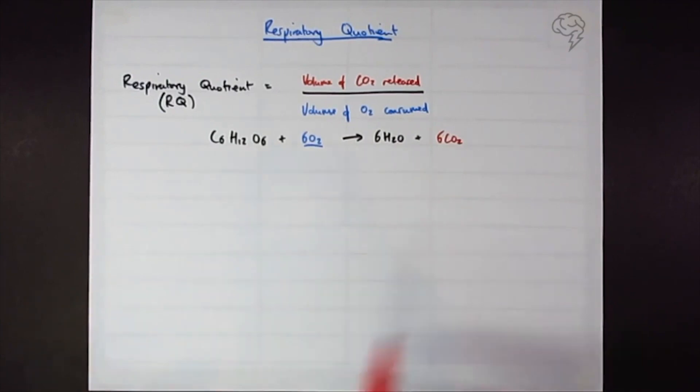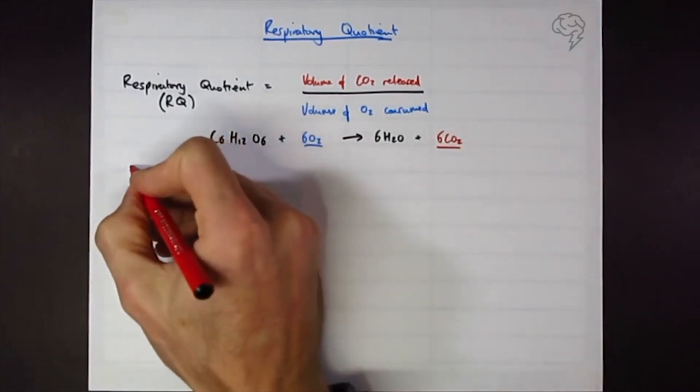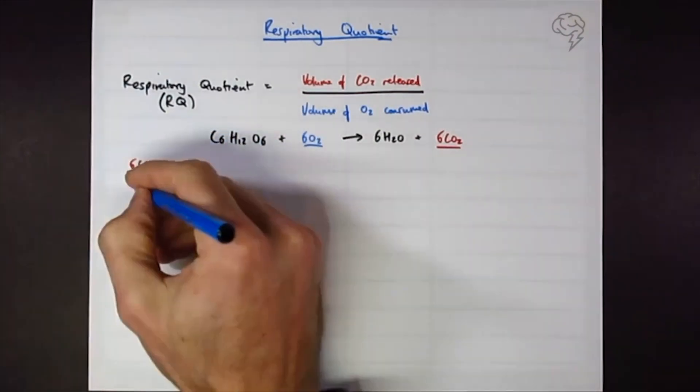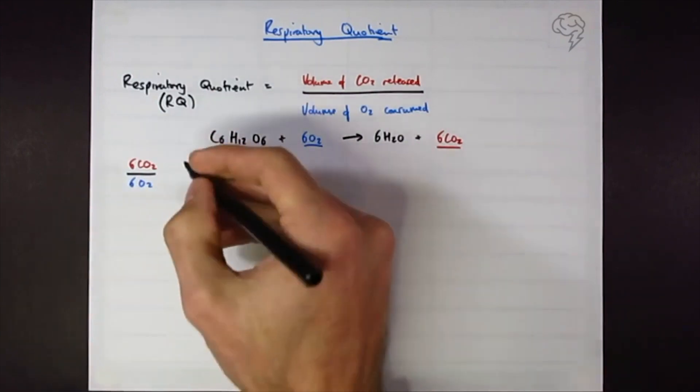This is a balanced equation for respiration of glucose. We've got six oxygen and six carbon dioxide. I'm going to put a table down this side. We've got six CO2 divided by our six O2, so that's six over six.